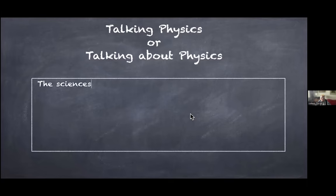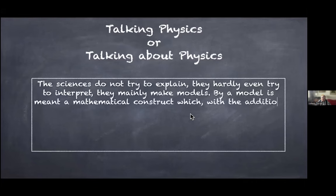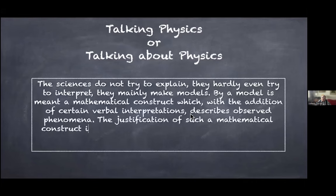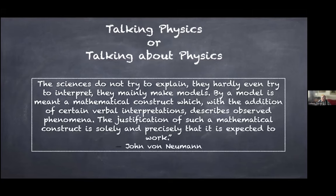Let me show you the quotation. The sciences do not try to explain, they hardly ever try to interpret. They mainly make models. By a model is meant a mathematical construct which, with the addition of certain verbal interpretations, describes observed phenomena. The justification of such a mathematical construct is solely and precisely that it is expected to work. And that definition of science was given by John von Neumann.